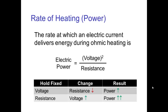The rate at which heating occurs in ohmic heating depends on the voltage and on the resistance. The rate at which energy is delivered is known as the power, and the electric power for a given voltage will go up as the resistance decreases. Or, if we hold the resistance fixed and increase the voltage, the electric power goes up very quickly since the rate of heating goes as the square of the voltage. So if we double the voltage, the rate of heating goes up by a factor of four.